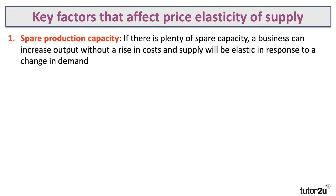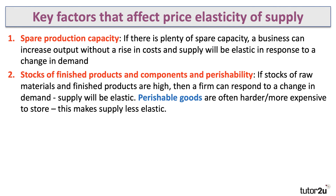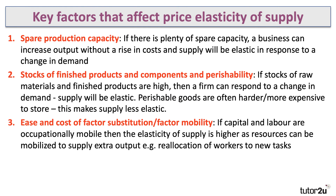Here's a quick revision of the key factors affecting price elasticity of supply — an exam question might ask you to examine two of them. First: spare production capacity. If a business has plenty of spare capacity — spare labor, land, and capital — it should be possible to increase supply without a rise in costs, making supply elastic. Second: stocks of finished products and intermediate goods. High stocks mean you can bring them to market if demand rises, making supply elastic. Perishable goods like avocado, which are harder and more costly to store, tend to make supply less elastic.